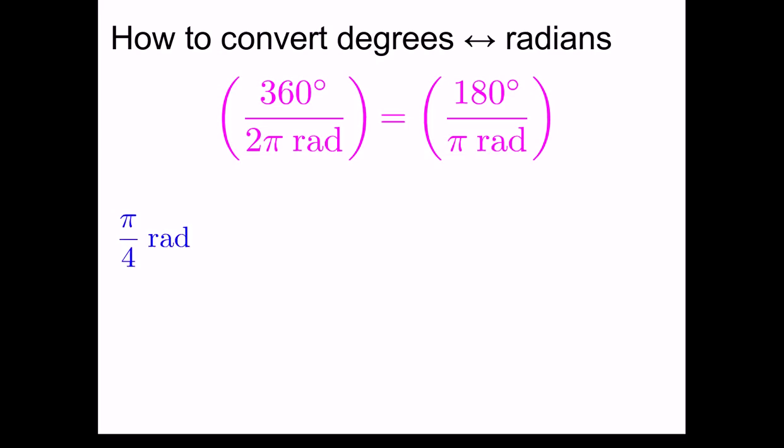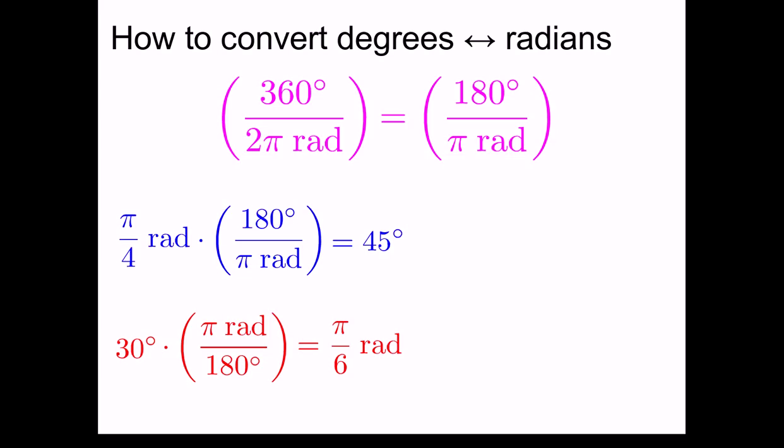For example, if I have an angle π over 4 radians, I can multiply that by 180 degrees over π radians, the units radians cancel, and I'm left with degrees. In this case, 180 over 4, or 45 degrees. On the other hand, if I begin with degrees, say 30 degrees, I can multiply it by the conversion factor of π radians to 180 degrees, the units of degrees cancel, and I'm left with π over 6 radians.